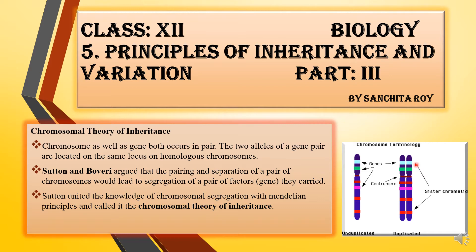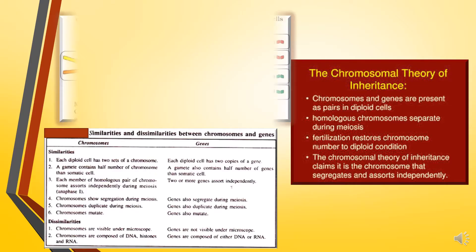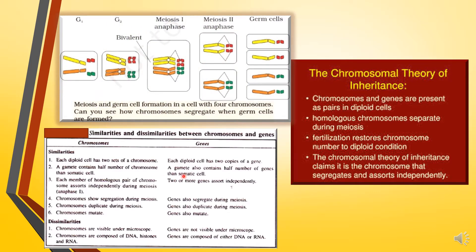Sutton and Boveri said that during the time of gamete formation, these chromosomes will get separated and these sister chromatids will get transferred into the different gametes. Over here is an example: in an organism with four chromosomes, from these four chromosomes in the G1 phase, the cell proceeds to the S phase, that is the synthesis phase.